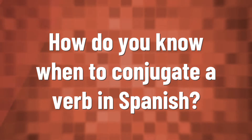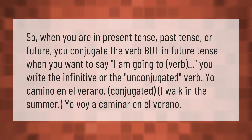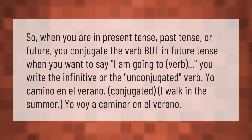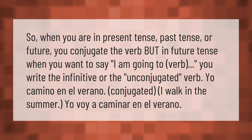When you are in present tense, past tense, or future tense, you conjugate the verb. But in future tense, when you want to say 'I am going to verb,' you write the infinitive or un-conjugated verb. For example: 'yo camino' (I walk in the summer) versus 'yo voy a caminar' (I am going to walk).